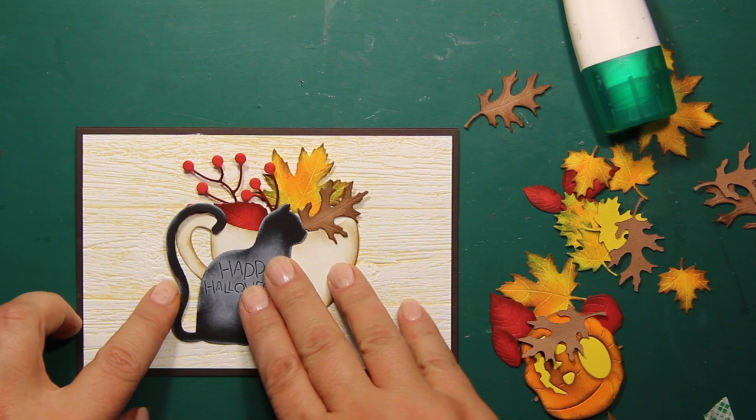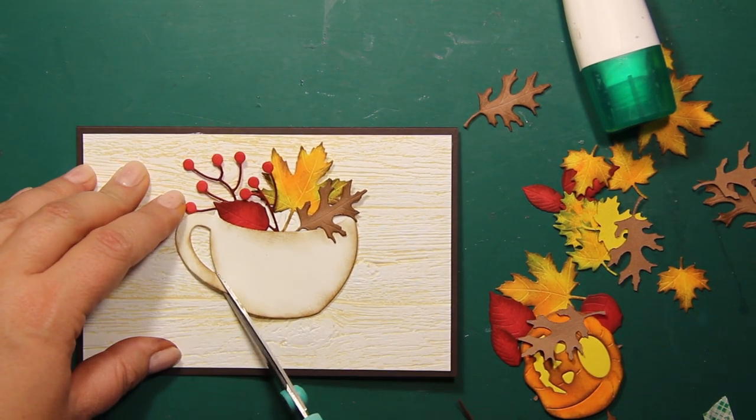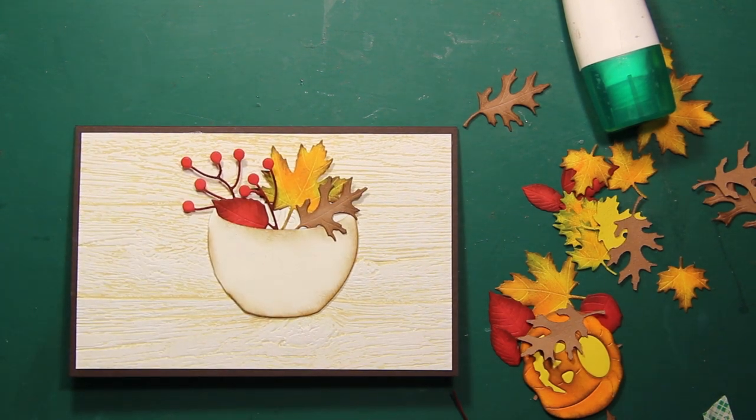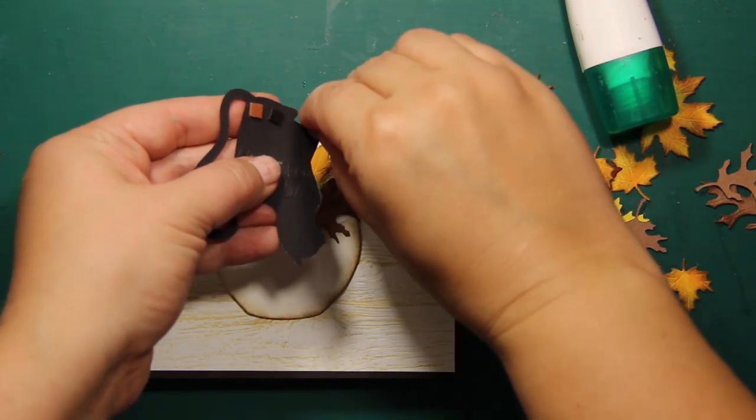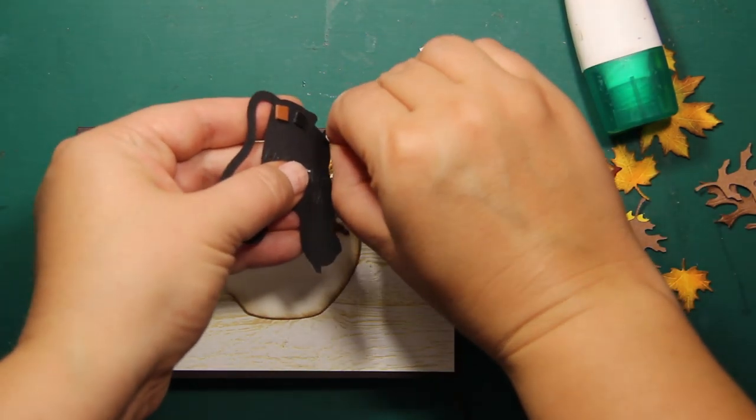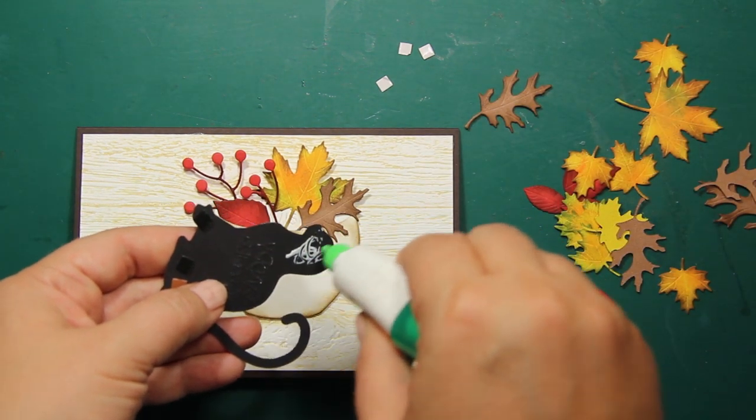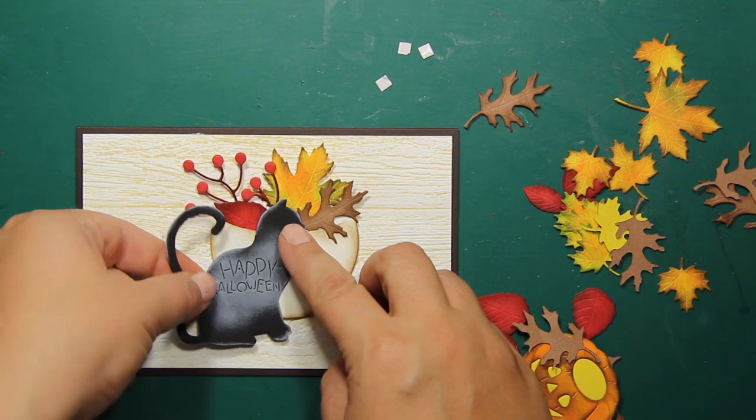At this point I have decided to trim off the handle from the cup because I don't need so many elements in the background. Then I'm going to attach the cat image using foam squares as well as liquid glue. I'm placing it right in front of the cup and sticking it down.